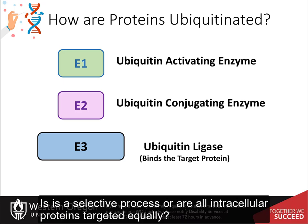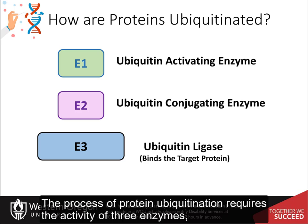So how are ubiquitin peptides added to the proteins? Is this a selective process, or are all intracellular proteins targeted equally? The process of protein ubiquitination requires the activity of three enzymes.